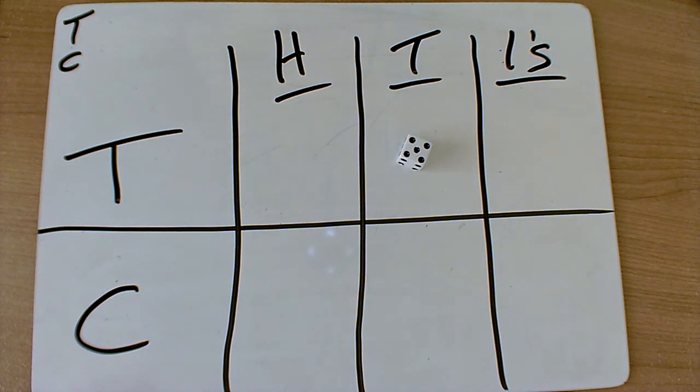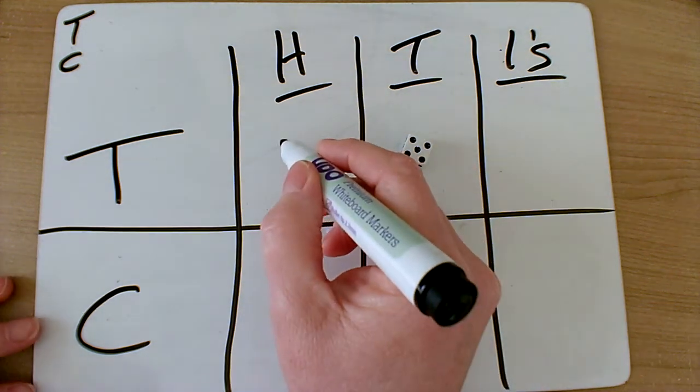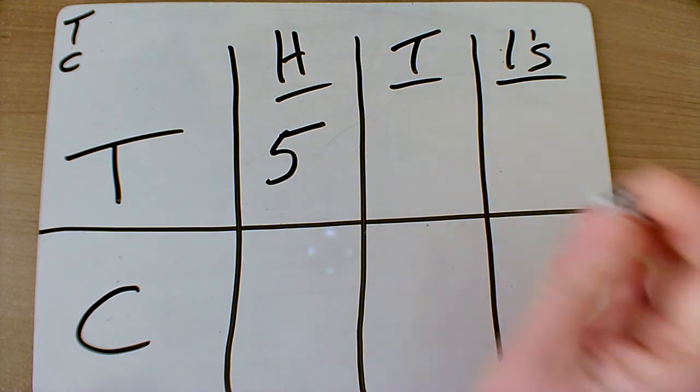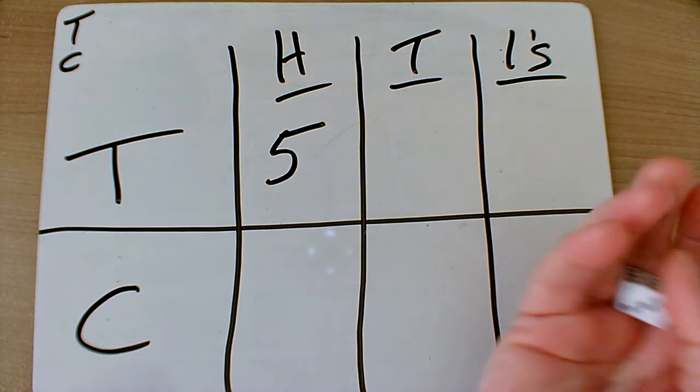I've got a five, so I'm going to put the five in my hundreds column to try and get as big a number as I can. This time I'm going to roll it on behalf of child.